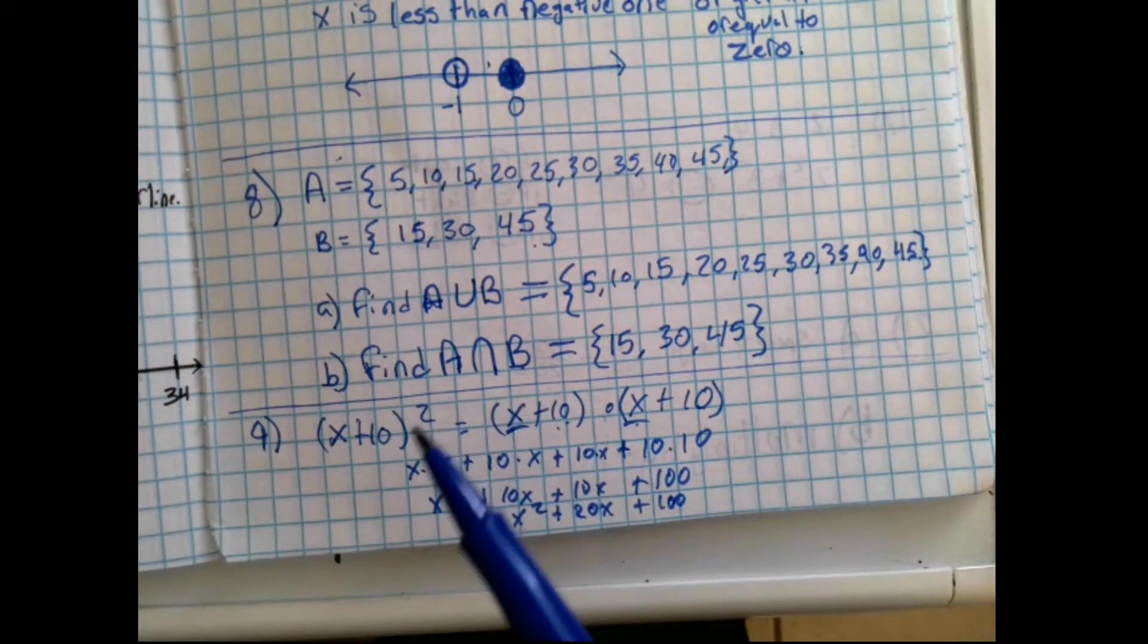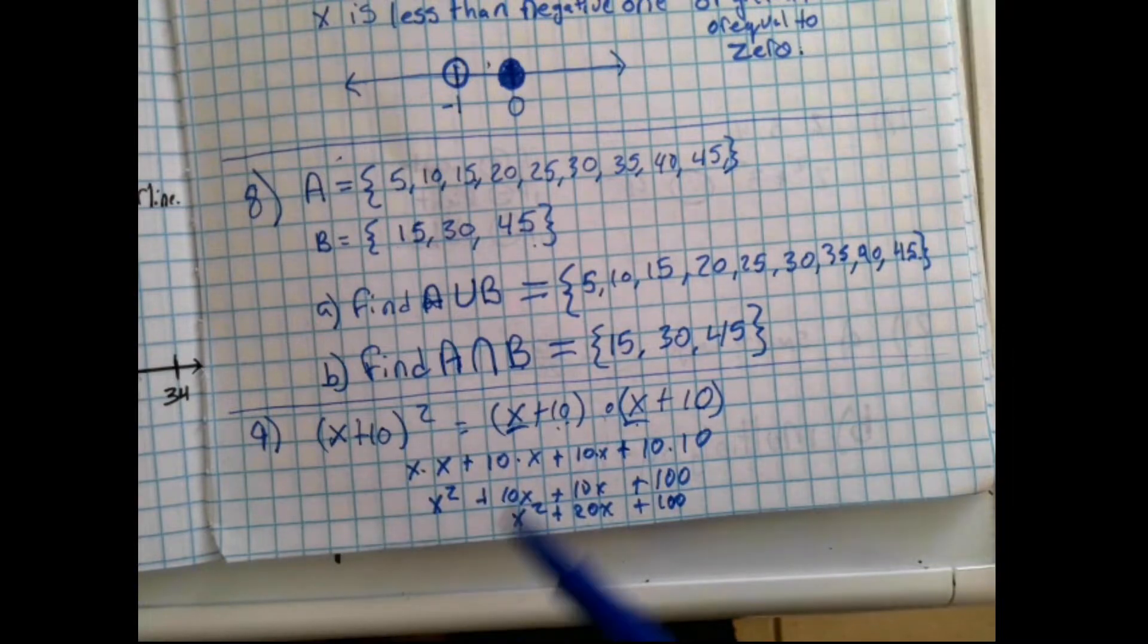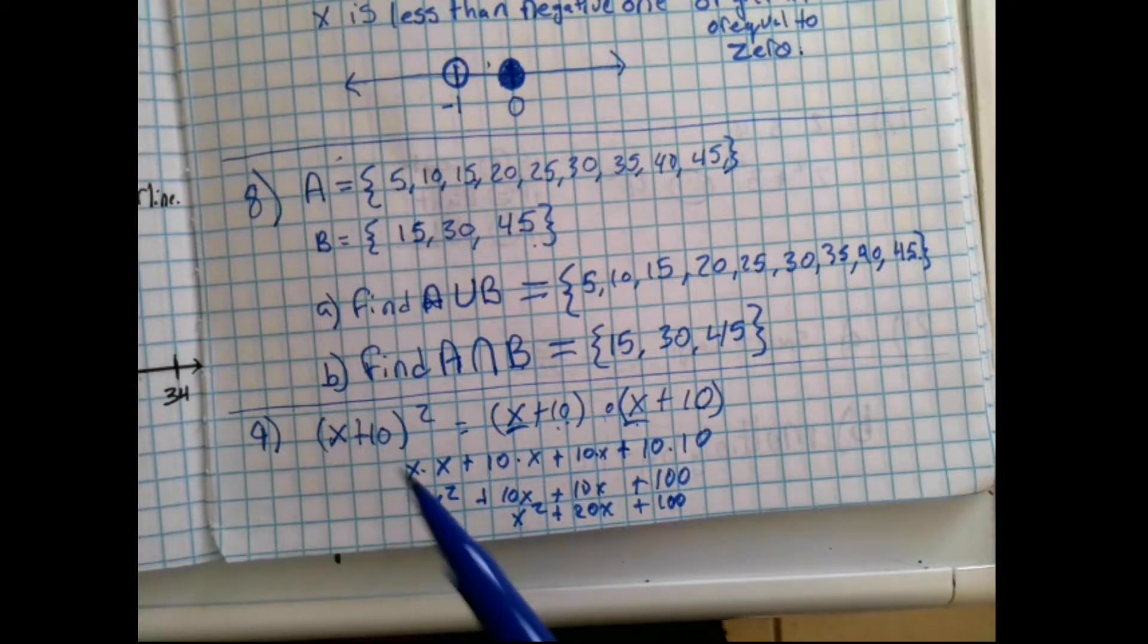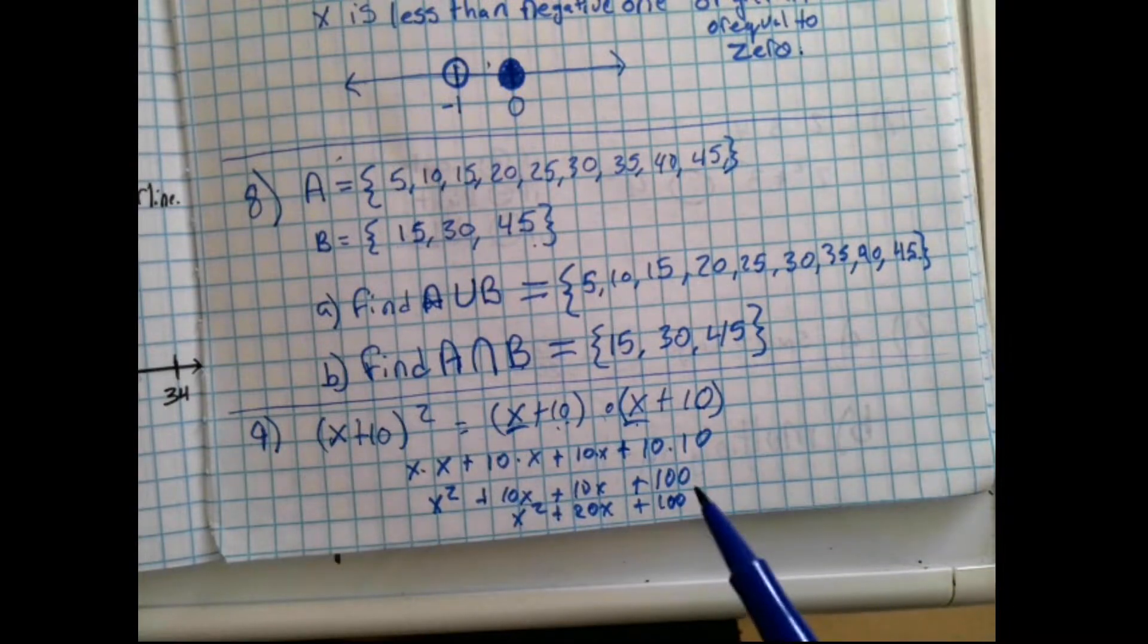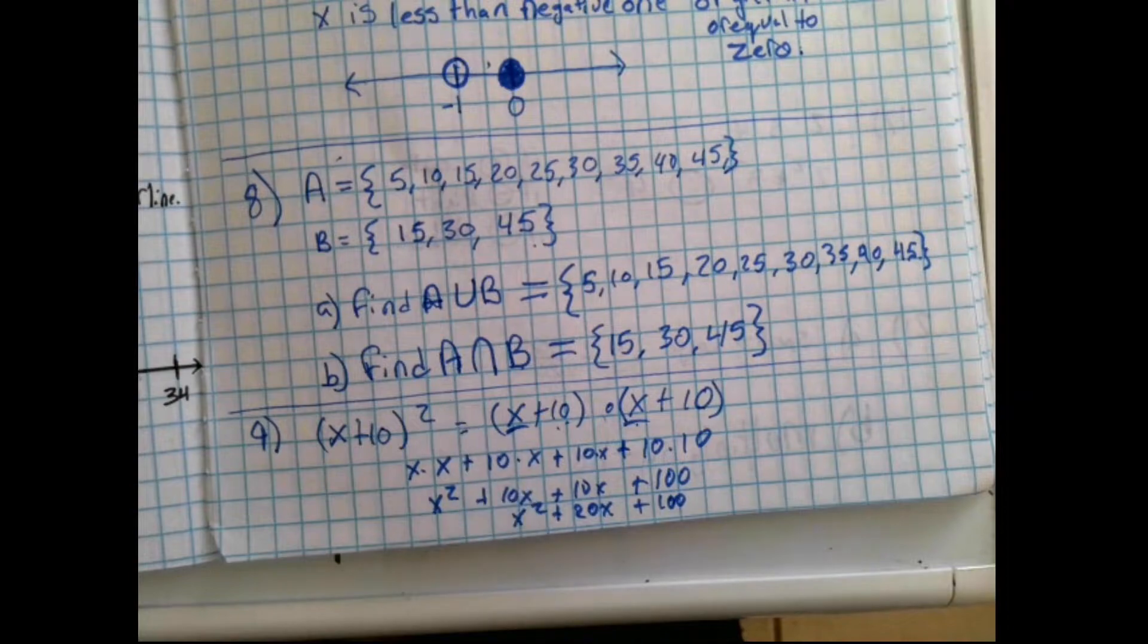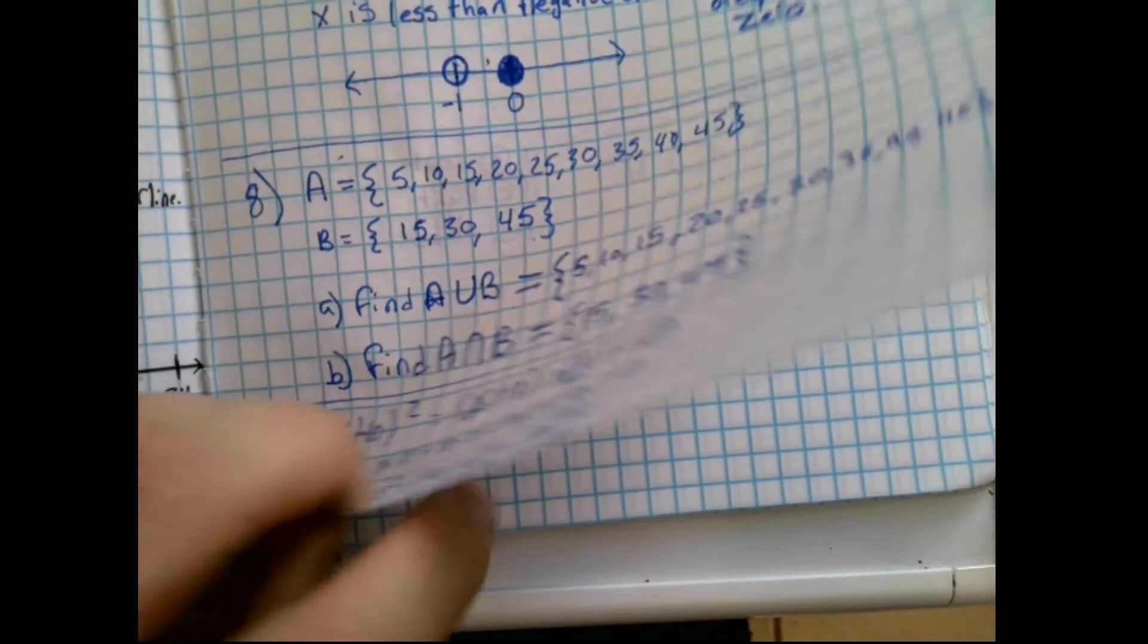Notice, when we have a squared, there's an interesting pattern that forms. When you have a binomial squared, the first term is your first term squared. The second term is your second term times 2. And your third term, your c, is your second term squared. Just an important thing to notice, if you ever see that pattern, you can always use that on a test.